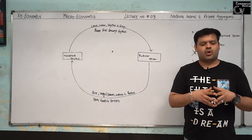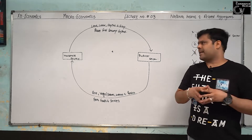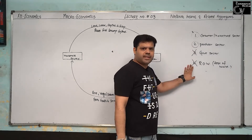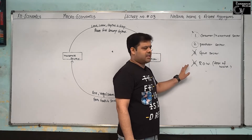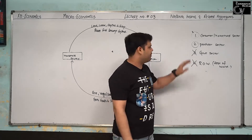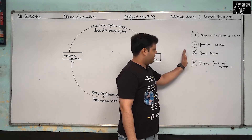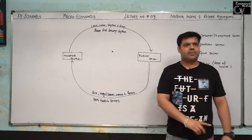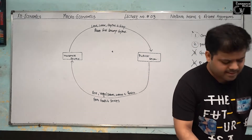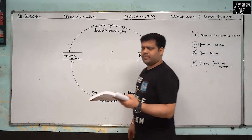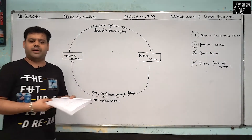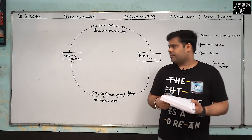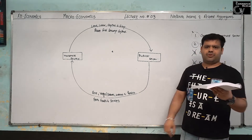Circular flow of income and product — two sector model. What is the two sector model? We ignore the government sector and the rest of the world sector because at the introductory level of macroeconomics these cannot be fully explained. So we ignore them for the time being. Now we are talking about the two sector model — it is the simplest form of closed economy.